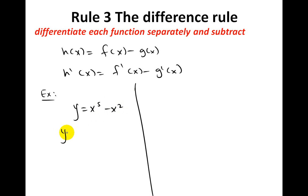If you have y equals to x to the power of 5 minus x squared, derivate each one along. So, this one will be 5x to the power of 4 minus, and this one will be like 2x to the power of 1. And that will be your final answer.